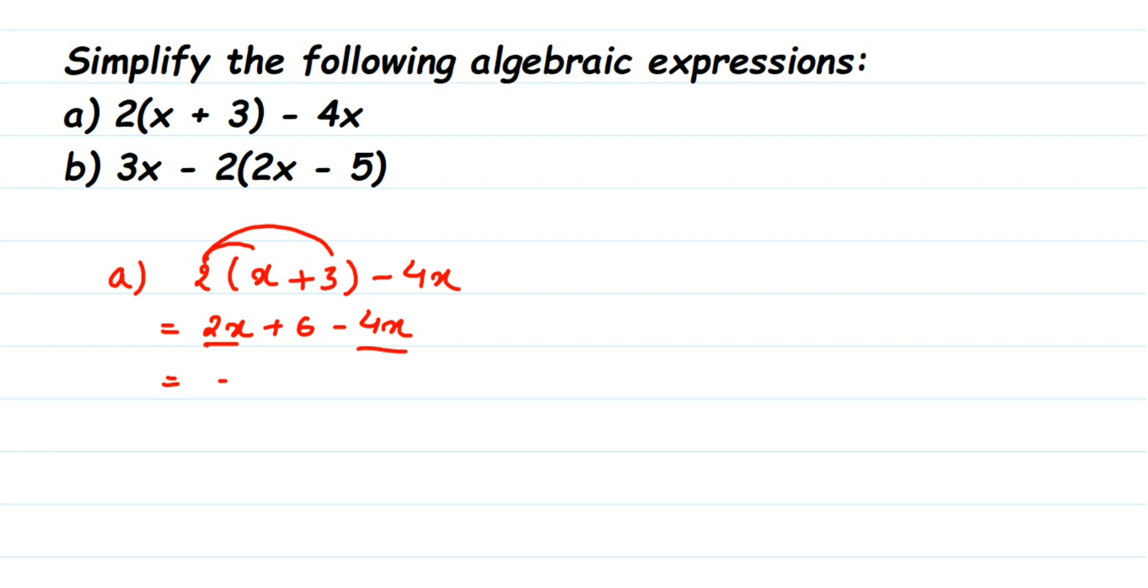Plus 6. There's no other constant except 6, so we get 6 here. So -2x + 6 is the simplified form. Now the second question: 3x - 2(2x - 5).